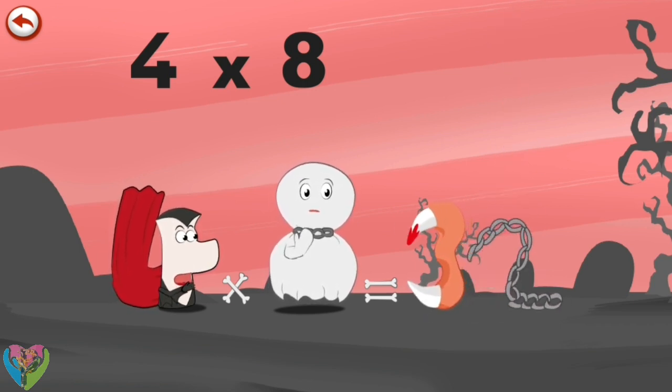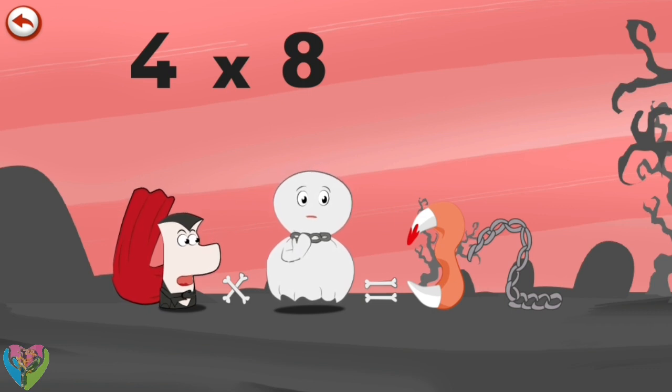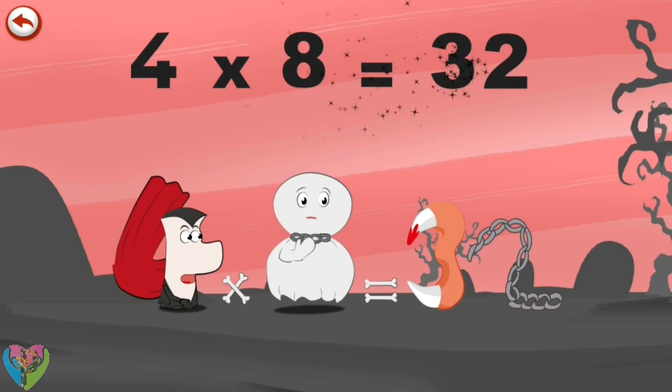The vampire's teeth in the shape of a 3 are pulled out by the piece of chain in the shape of a 2. 4 times 8 is 32.